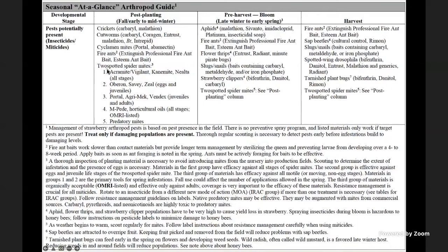Two-spotted spider mites — we have a number of miticide options. Moving to pre-harvest or bloom time, late winter to early spring, the major pest issues include aphids, fire ants, flower thrips, slugs and snails, strawberry clippers, and two-spotted spider mites. During the harvest period, fire ants are still an issue; sap beetles, slugs and snails become serious if moisture is not managed; spotted wing drosophila is a key pest; and tarnish plant bugs and mites can be a problem year-round.